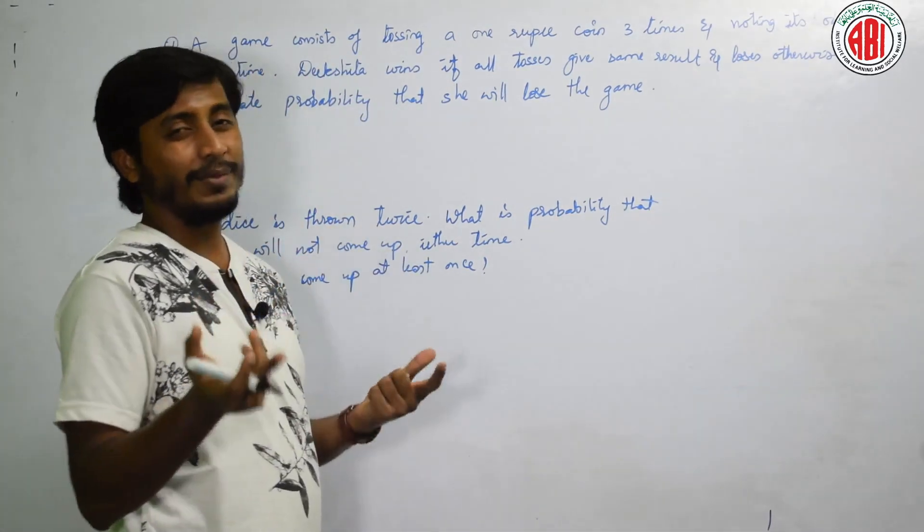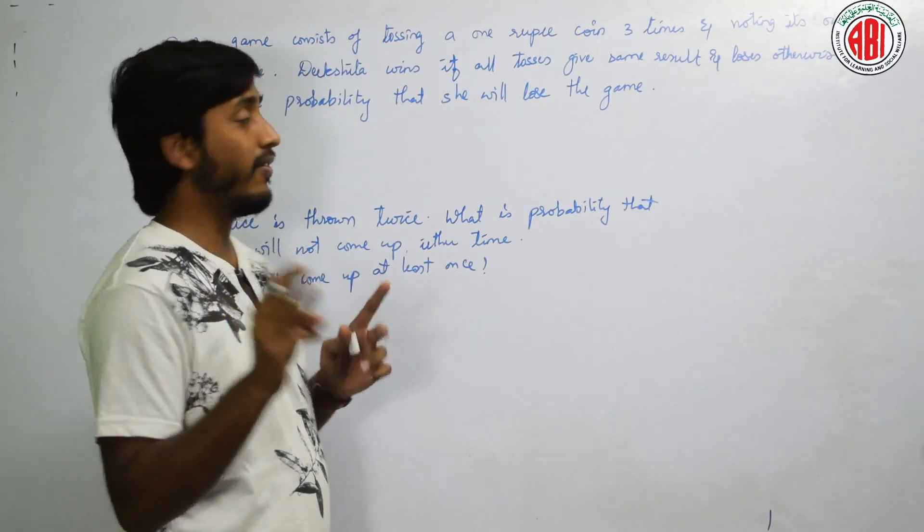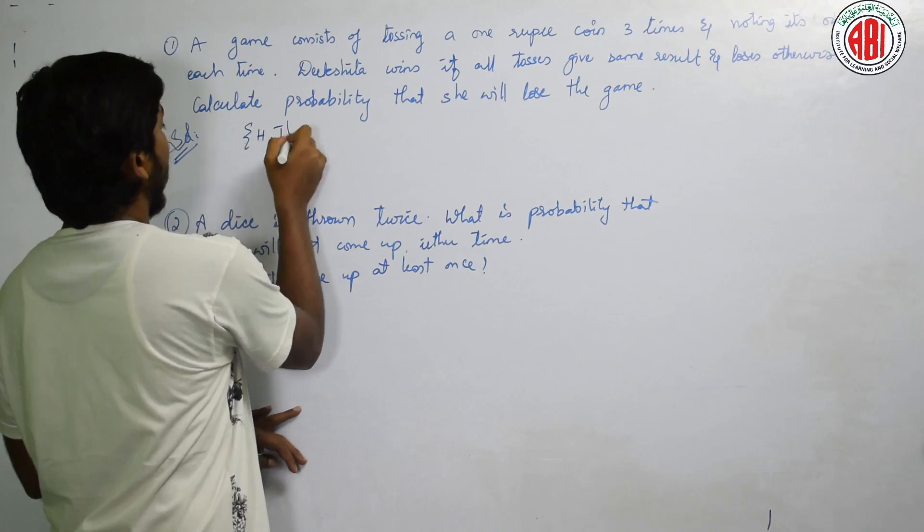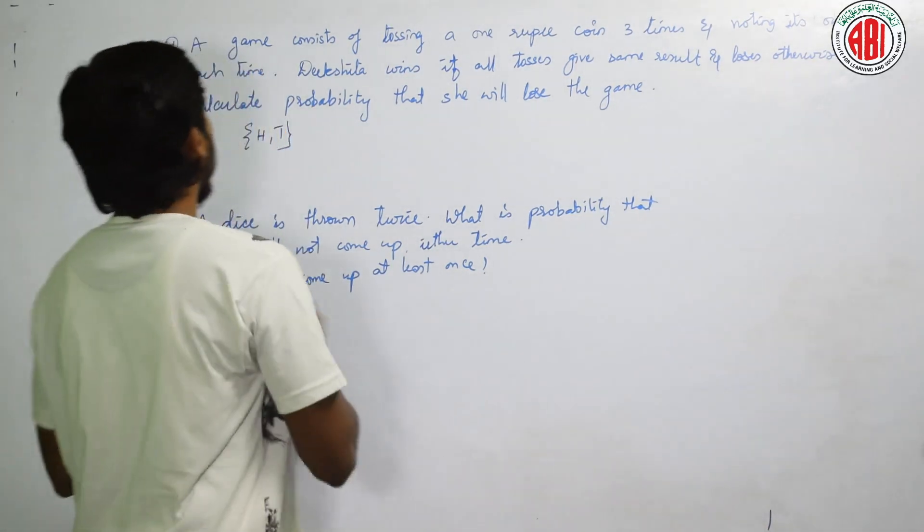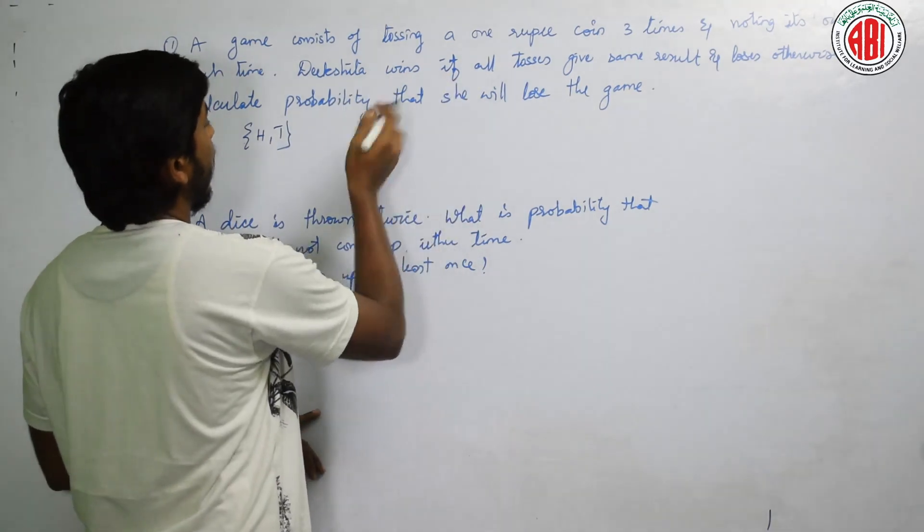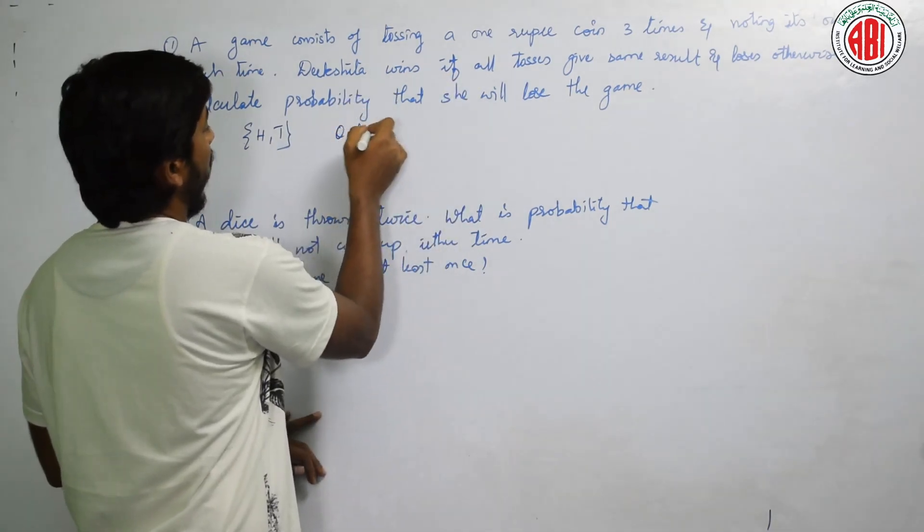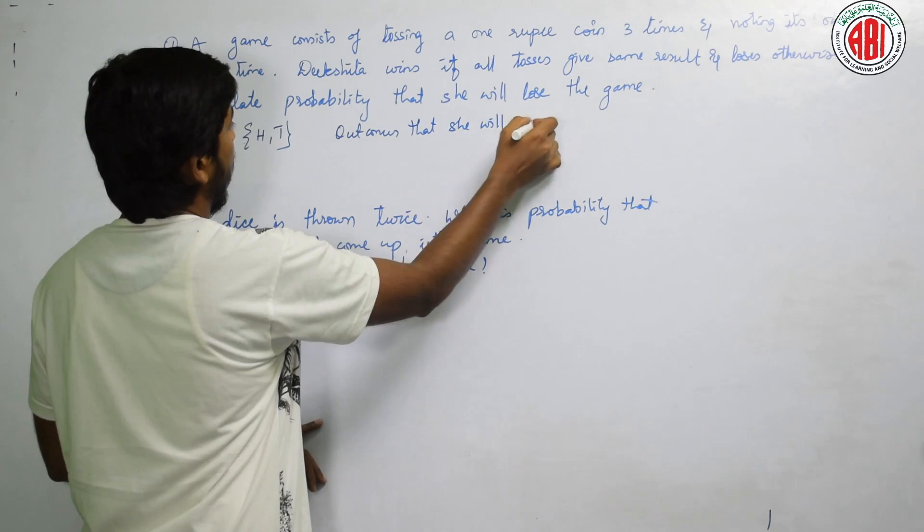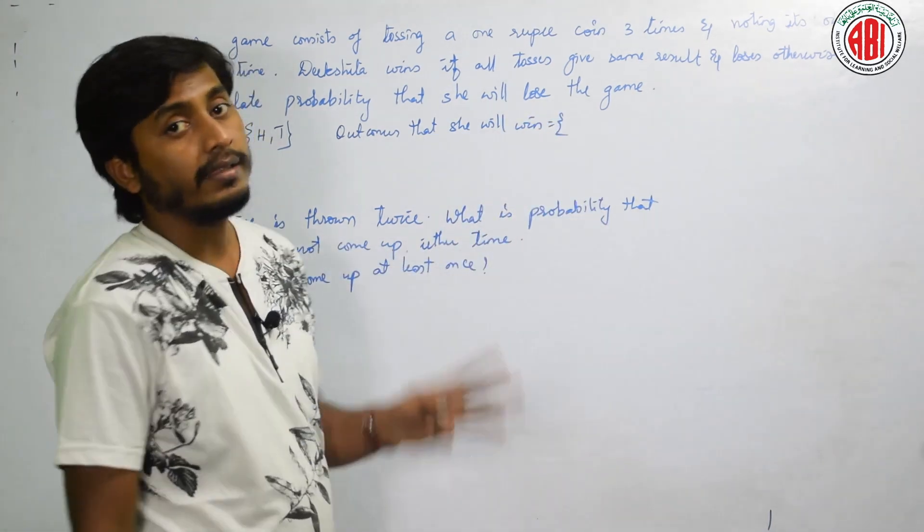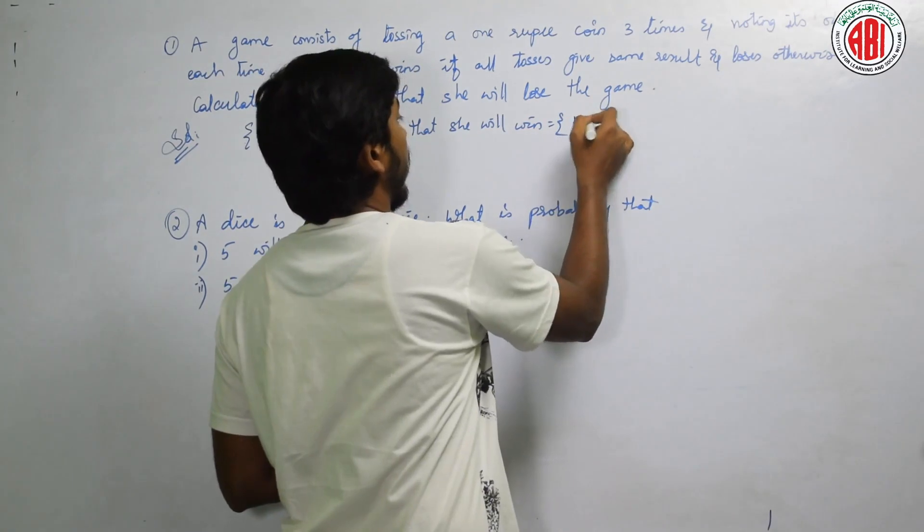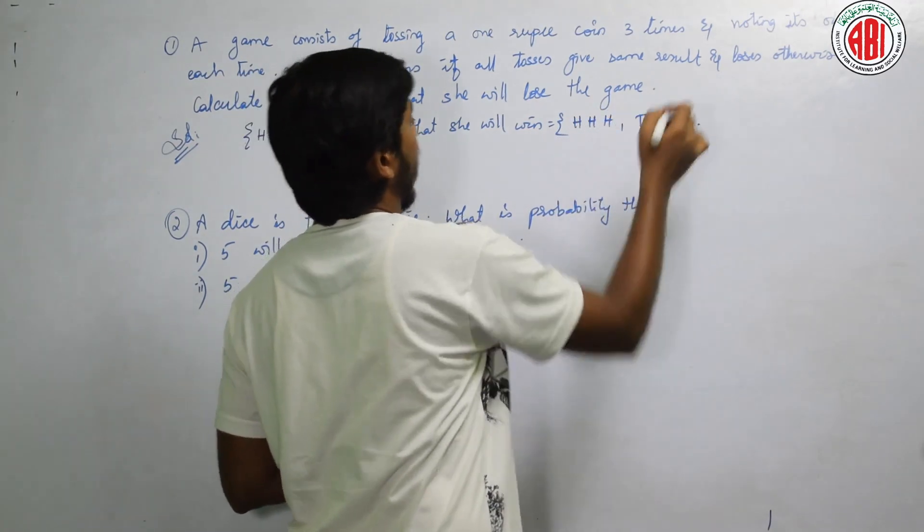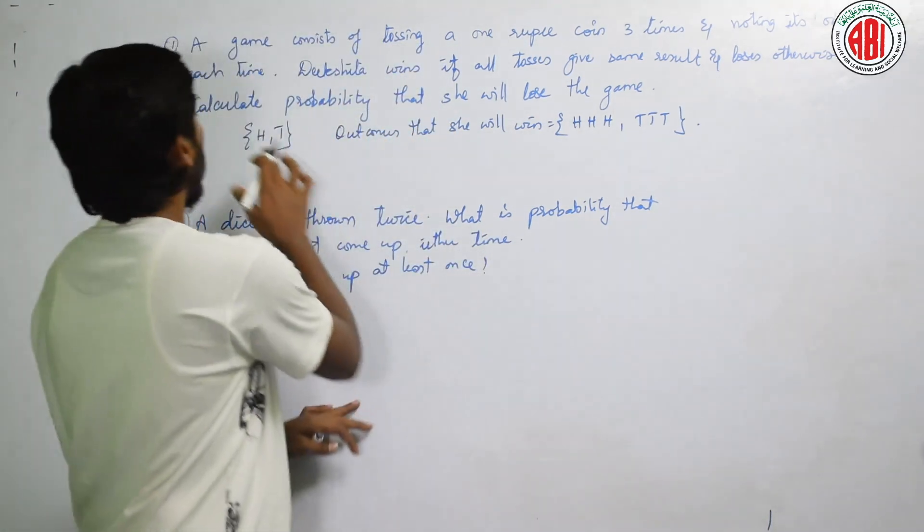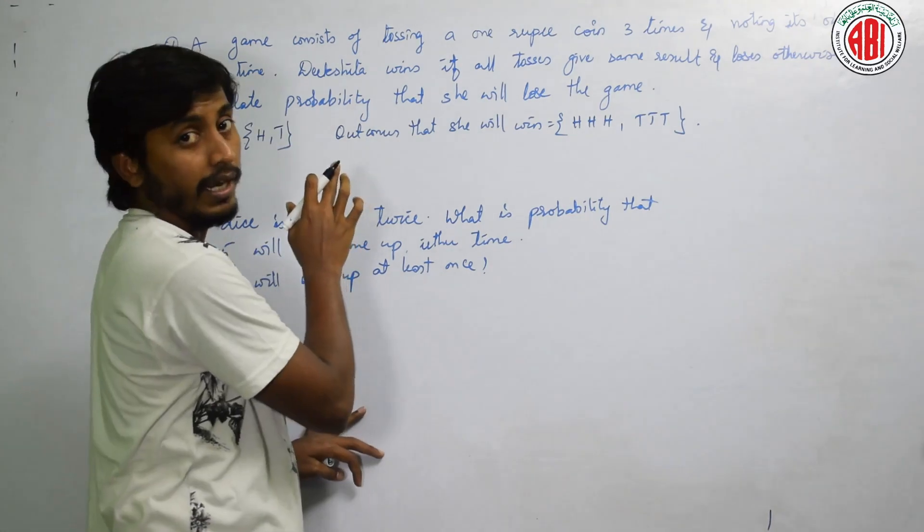Let us assume 3 coins. We will have 3 different outcomes. What are the basic outcomes? Head or tail. Now tell me, what is the probability that she will win? Outcomes that she will win - outcomes are 3 heads or 3 tails. So 2 conditions. Total are 2.